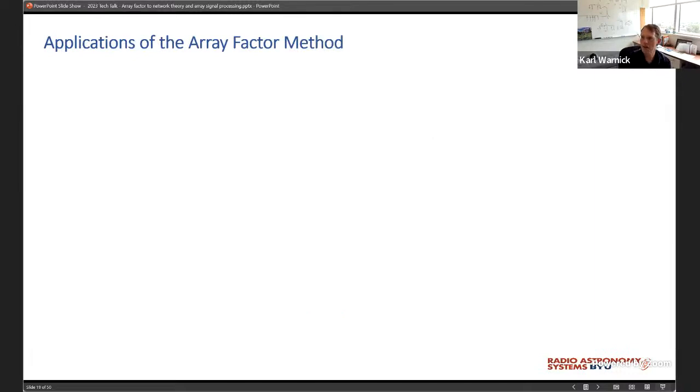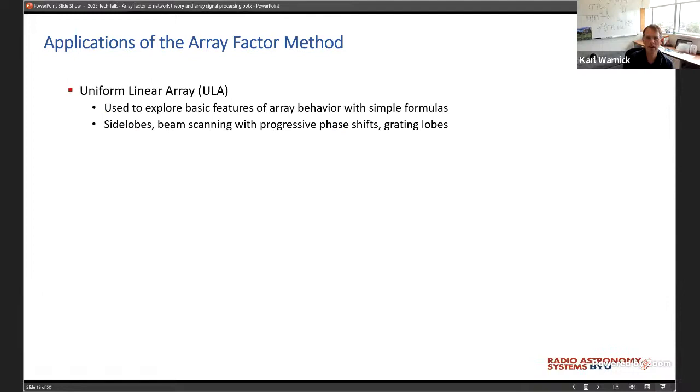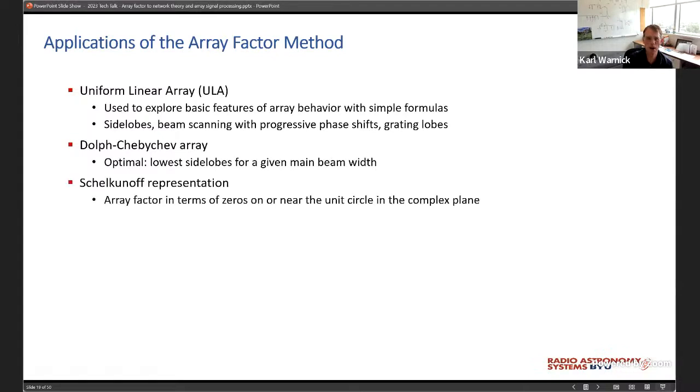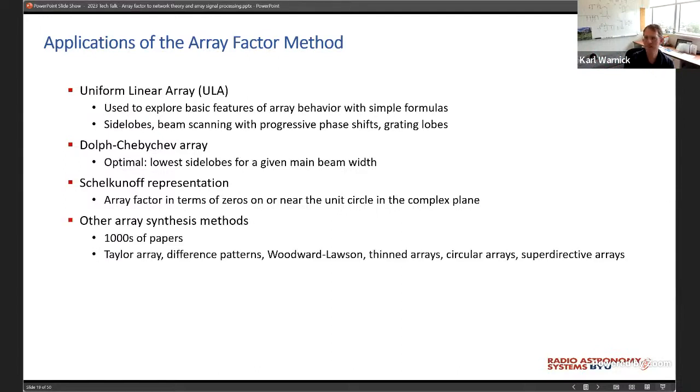Over the years, people have written thousands of papers and many books on the topic. Uniform linear array, which we analyze in the classroom. Dolph-Chebyshev array, which has a theoretical optimality property. Schelkunoff representation is really mathematically fun. You can put zeros in the complex plane and then move those zeros in controlled ways to do interesting things with the array, the way the array radiates in terms of scanning angle and side lobes. And many, many others. That's just the beginning. There's a whole alphabet soup of techniques based on the array factor method.